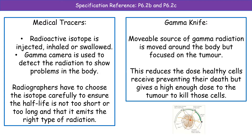The radiographers responsible for handling these isotopes need to select which one carefully. We do not want something with a half-life that's either too short or too long. A half-life too short means we won't be able to detect them properly before they break down. A half-life too long means we're emitting radiation for longer than necessary, exposing cells to a greater dose. We also need to make sure it emits the right type of radiation — you do not want an alpha source, as that won't penetrate through the skin to reach the camera and will be absorbed by surrounding cells, causing significant damage.